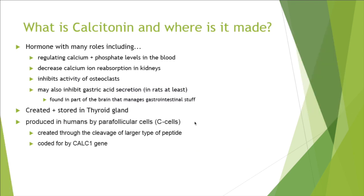Calcitonin is a hormone and it has several different roles. Its main role is to regulate the amount of calcium and phosphate in the blood. In terms of calcium regulation, it decreases the amount of calcium ion that's reabsorbed into the kidneys, therefore decreasing the amount of calcium in the blood. It also inhibits the activity of osteoclasts, which are responsible for breaking down bone and releasing calcium into the blood.